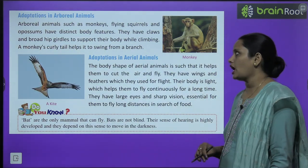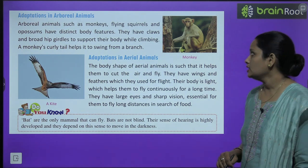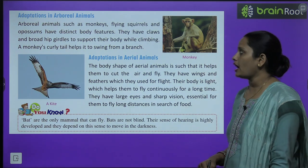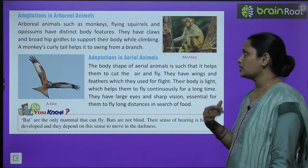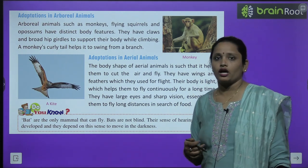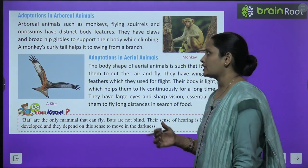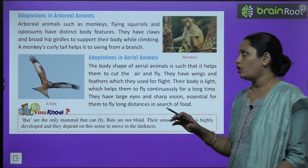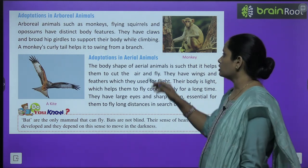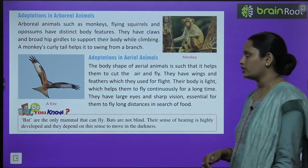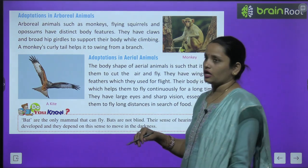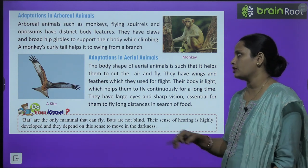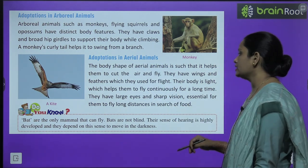Next comes adaptation in arboreal animals. Arboreal animals such as monkey, flying squirrel, and opossum have distinct body features. They have claws and broad hip girdles that support their body when they climb trees. The monkey's curly tail helps it to swing from one branch to another.